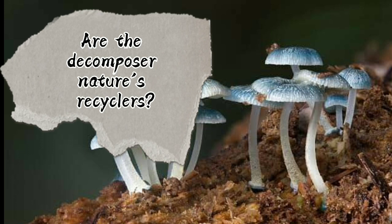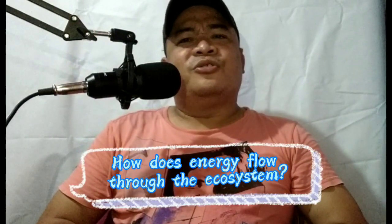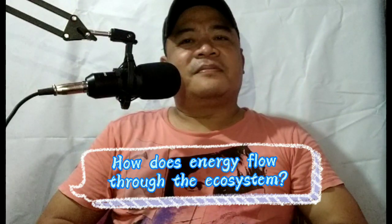Question: are decomposers nature's recyclers? The answer is yes. While obtaining energy for their own needs, the decomposer returns simple molecules to the environment. These molecules can be used again by other organisms. Question: how does energy flow through the ecosystem? Answer: in one direction only. The movement of energy through the ecosystem can be shown in a diagram called a food chain.